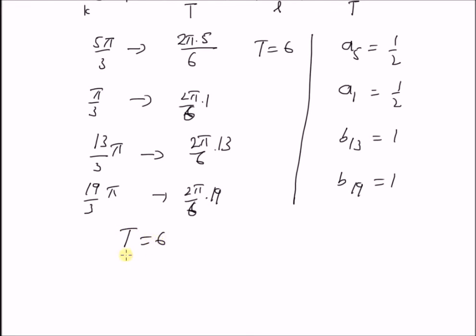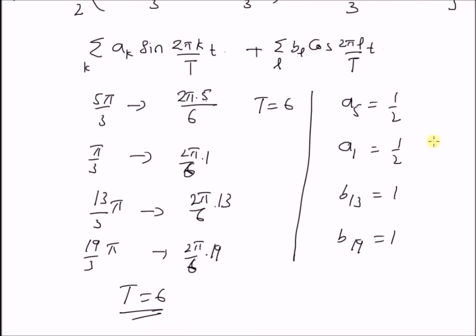Therefore, the period T is equal to 6 and the frequencies for sinusoids are k equal to 1 and k equal to 5. And for the cosines, the values of l are 13 and 19. And all the other values of b's, that is b1 to b12 and b14 to b18 and b20, 21 and so on are all zeros.